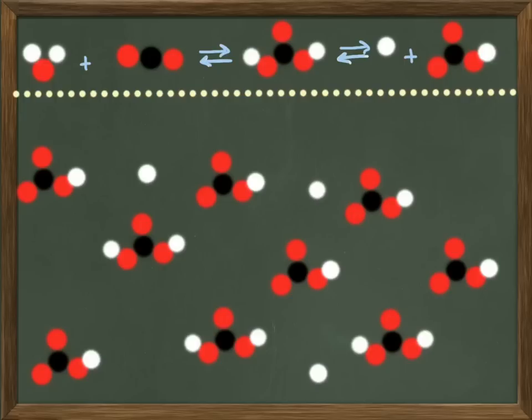thus reestablishing a balance. And this is how buffers work. They maintain a pH within a certain range by releasing hydrogen ions or absorbing hydrogen ions accordingly.